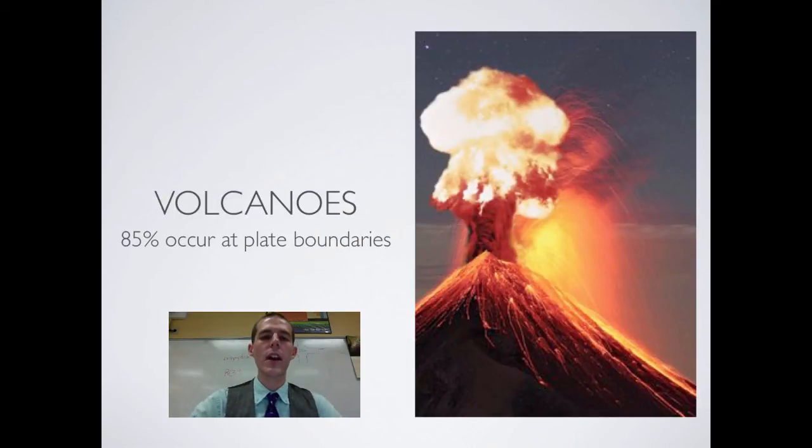Another consequence of the fact that the plates move around past each other are volcanoes. Because we talked about that asthenosphere is liquid molten magma underneath the earth. At those boundaries where the plates meet, there are cracks. And that magma can rise up through those cracks, causing volcanoes. Also, as the plates slide past each other, they melt and come back up through and cause volcanoes.